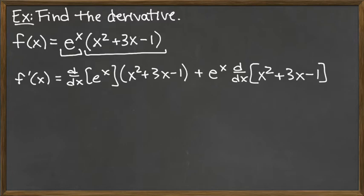So now to finish up the derivative, we need to take the small little derivatives within the product rule. So the derivative of e to the x is itself, so we've got e to the x times the factor x squared plus 3x minus 1.